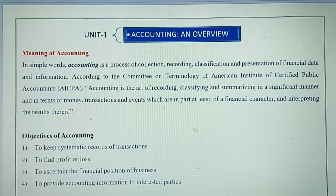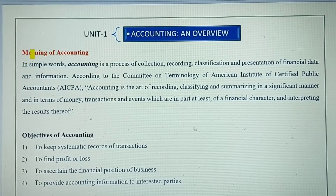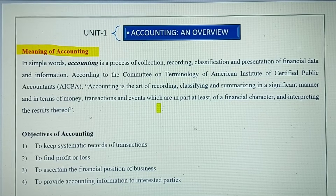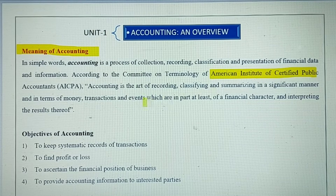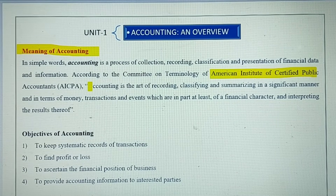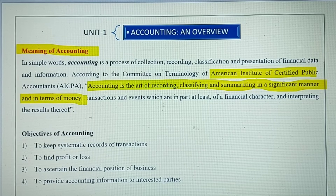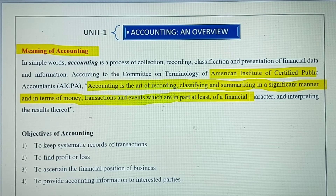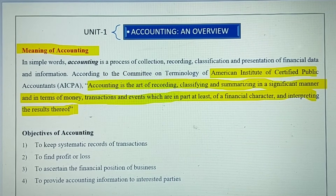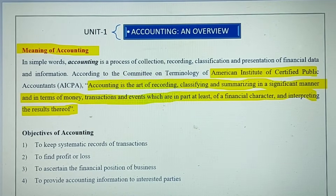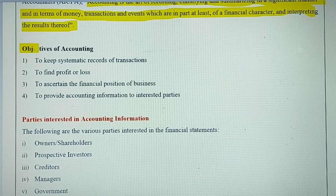Without wasting any time, let's start with Unit 1 — Accounting and Overview. You should know what accounting is. The best and most popular definition is given by the American Institute of Certified Public Accountants (AICPA): 'Accounting is the art of recording, classifying, summarizing in a significant manner and in terms of money, transactions and events which are at least of a financial character, and interpreting the results thereof.' This definition covers all the functions and objectives of accounting.